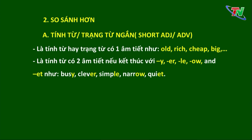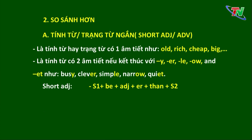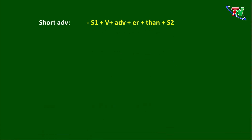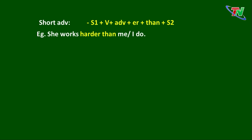Các ví dụ về tính từ 2 âm tiết kết thúc với 'y' dài: busy, clever, simple, narrow và quiet. Chúng ta sẽ nhìn cấu trúc so sánh hơn của tính từ ngắn: Chủ ngữ 1 + be + tính từ + ER + than + chủ ngữ 2. Với trạng từ ngắn: Chủ ngữ 1 + động từ + trạng từ + ER + than + chủ ngữ 2. Nếu dùng chủ ngữ, cô giáo sẽ sử dụng trợ động từ sau chủ ngữ.